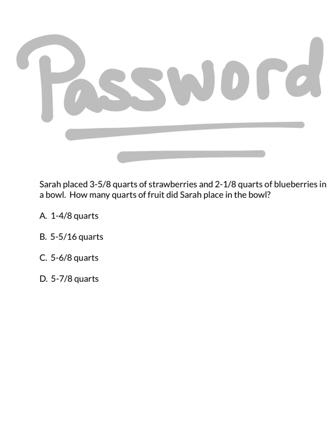Let's take a look at our password for tonight's lesson. It says Sarah placed 3 and 5/8 quarts of strawberries and 2 and 1/8 quarts of blueberries in a bowl. How many quarts of fruit did Sarah place in the bowl? Is it 1 and 4/8 quarts, 5 and 5/16 quarts, 5 and 6/8 quarts, or 5 and 7/8 quarts? Make sure you record your answer in your journal and bring it with you to class on Monday. See you then.